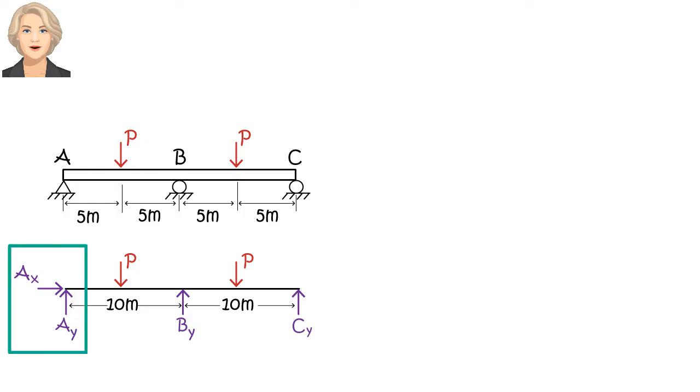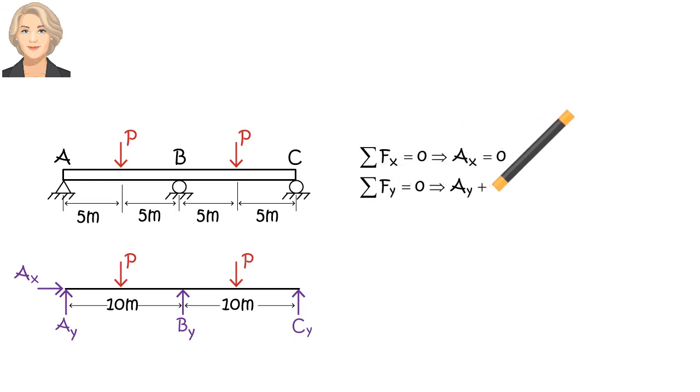Two forces at the pin support, and one force at each roller support. The equilibrium equations are AX equals zero. AY plus BY plus CY minus 2 times P equals zero. 5 times P plus 15 times P minus 20 times CY minus 10 times BY equals zero. Here, we have four unknowns but only three equations.